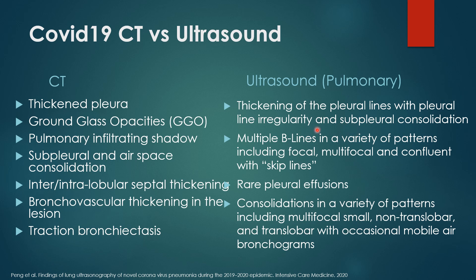On ultrasound with COVID-19, you see thickening of the pleural lines with pleural line irregularity and subpleural consolidation. There are multiple B-lines in a variety of patterns, often very confluent with skip areas. Pleural effusions are rare with COVID-19. Consolidations occur in a variety of patterns including multifocal, small non-translobar, and translobar, with occasional mobile air bronchograms.